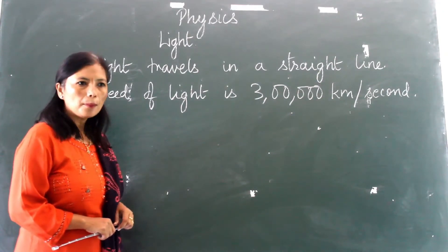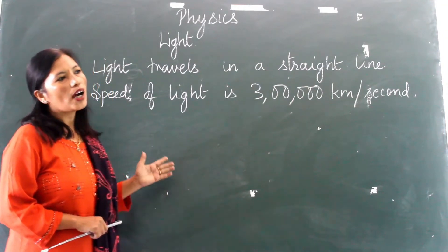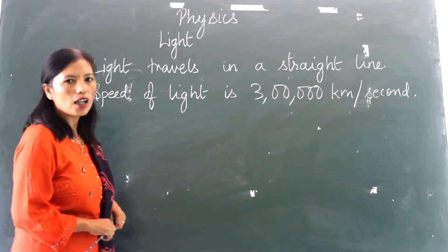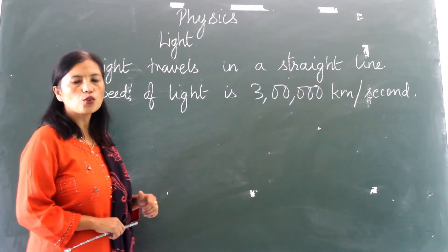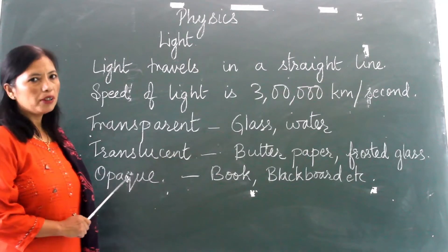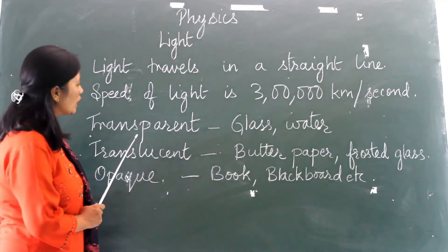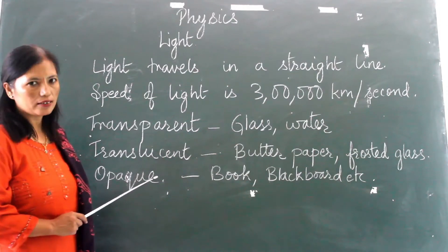But some objects allow light to pass through them and some objects do not allow light to pass through them. Based on the ability of light to pass through them, objects or materials are usually divided into three categories.